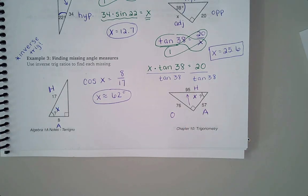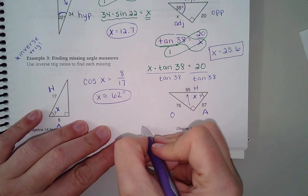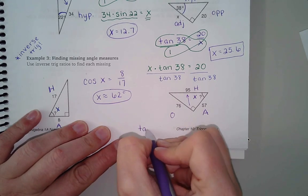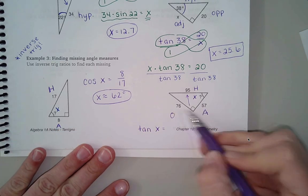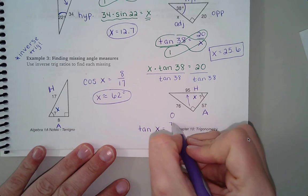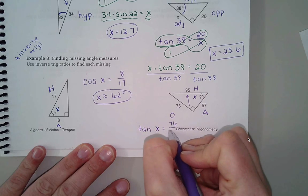So I am just randomly picking, and I'm going to pick tangent. So I'm going to say tangent of x equals opposite over adjacent. So that would be 76 over 57.